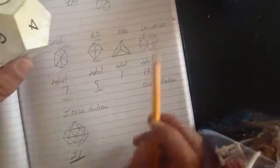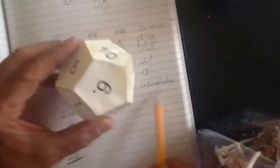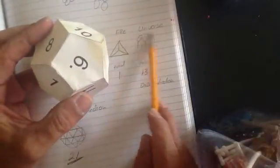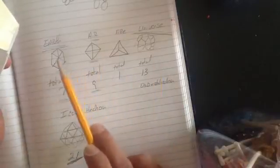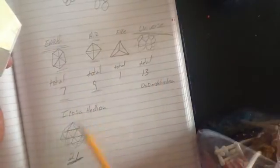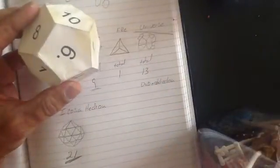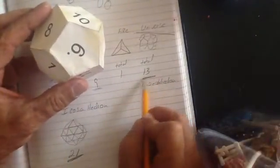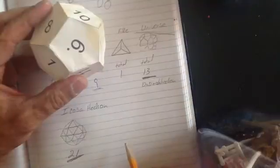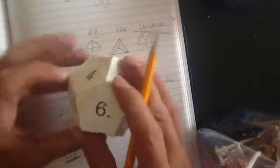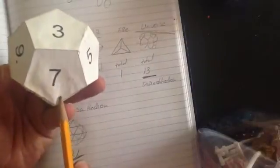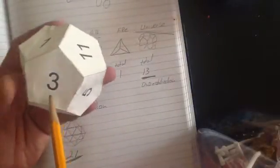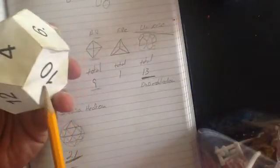This one, which is the dodecahedron, the dodecahedron, which is considered to be the universe, or I would almost say even like spirit, because we have earth, air, fire, water, spirit. It always totals thirteen. Six, opposite side seven. Three, opposite side ten.